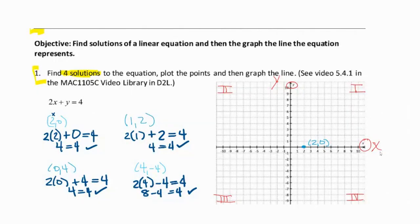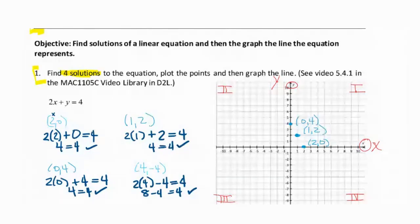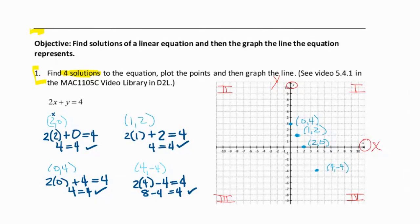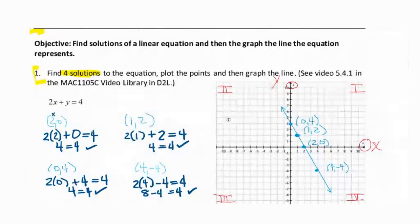So in which quadrant would the point one, two appear? Very good, it'd be in quadrant one. We would go to one on the x and up to, okay, here we go. All right, zero, four is not actually in a quadrant. Where is that one located? Yeah, it's on the y axis. All right, and four negative four, which quadrant is that one in? Very good, quadrant four. Okay, so we've plotted those four, and now I'm going to connect them. Any solution to this linear equation in two variables is going to appear somewhere along this line. So we've graphed the line.